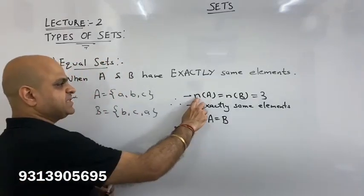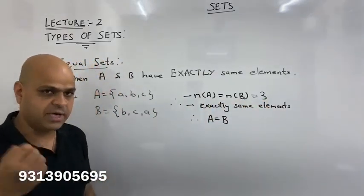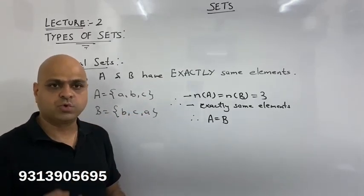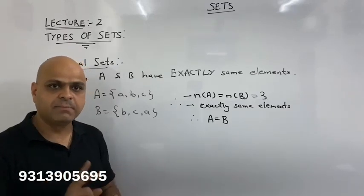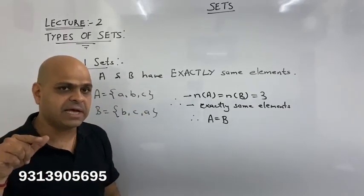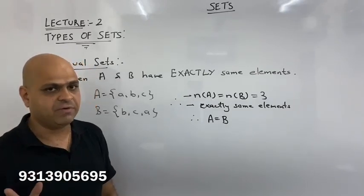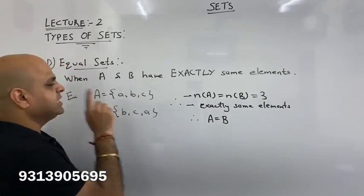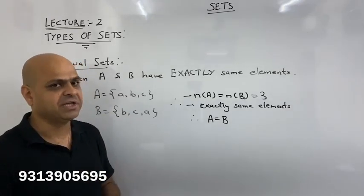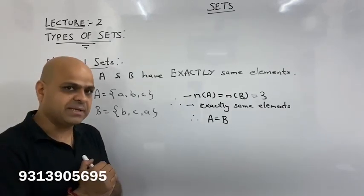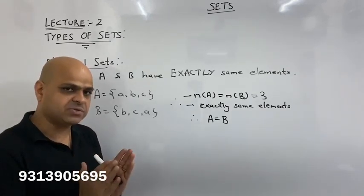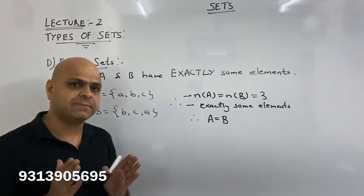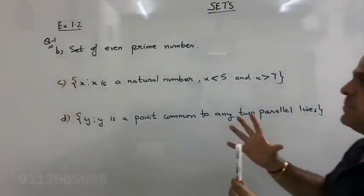An equivalent set is one where the number of elements is the same, but the elements themselves are different. This is the distinction between equal sets and equivalent sets.